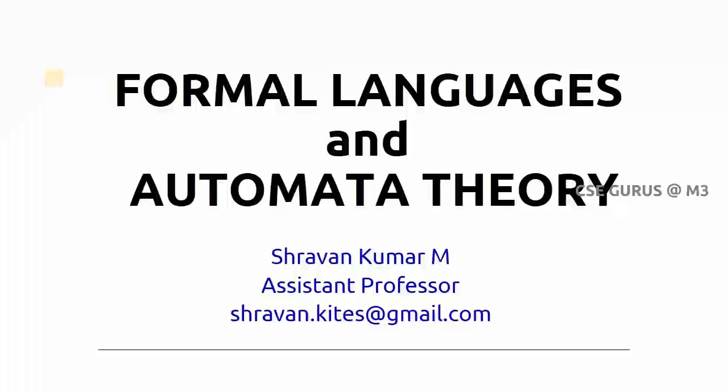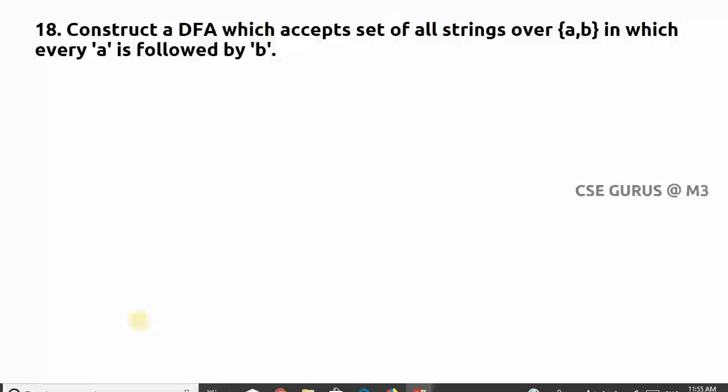Hi friends, welcome to the class of Formal Language and Automata Theory. Coming to question number 18: Construct a DFA which accepts set of all strings over {a,b} in which every 'a' is followed by 'b'.